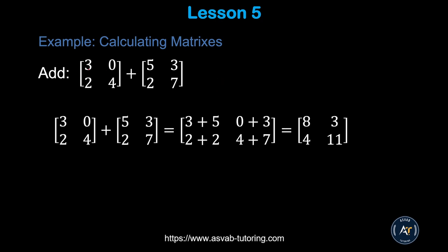Now we'll learn matrices. To add two matrices, add the corresponding elements. Three plus five is eight, zero plus three is three, two plus two is four, and four plus seven is eleven. This type of question has been appearing on the test recently, so make sure you practice it.